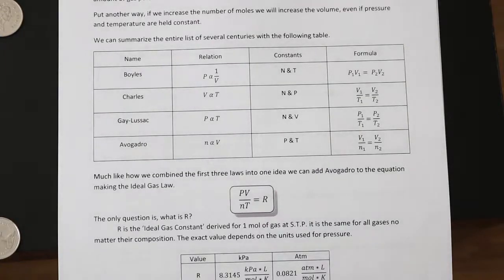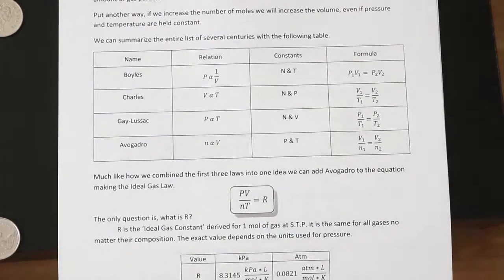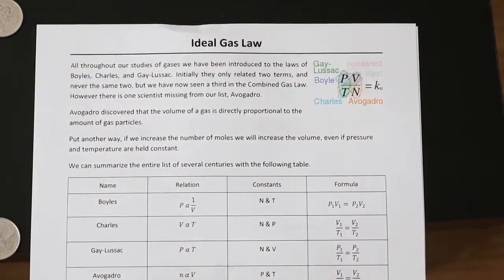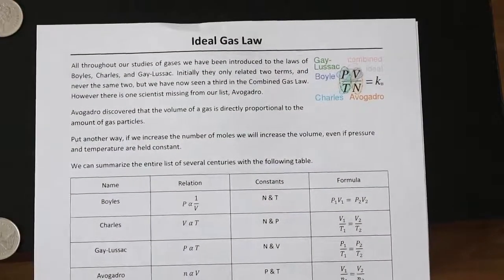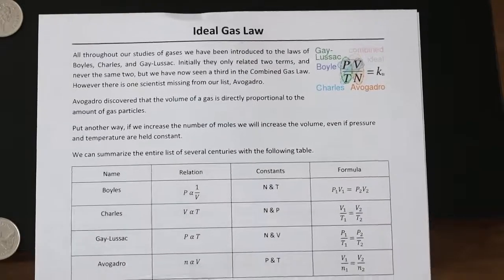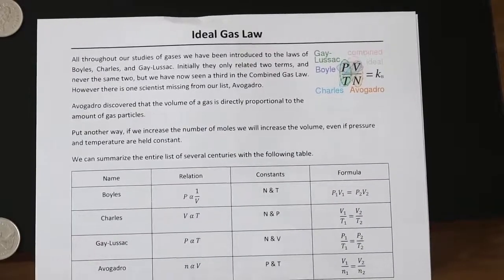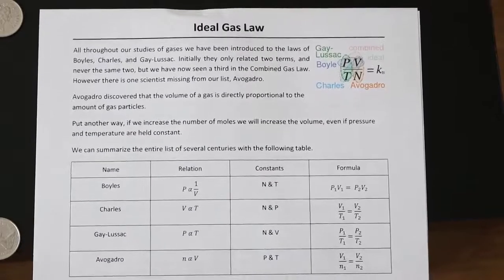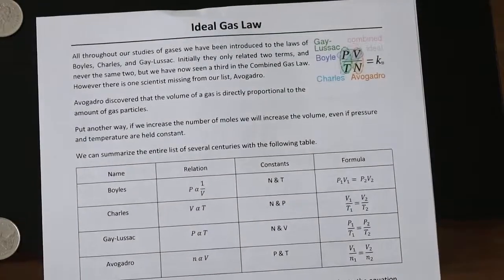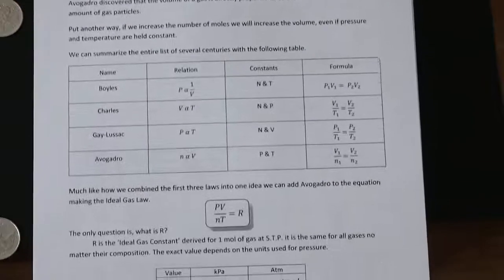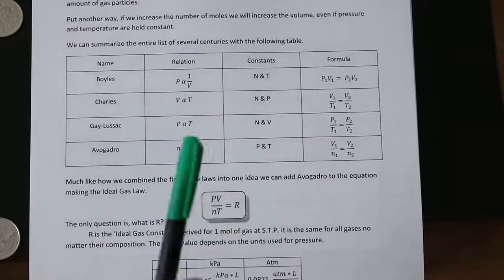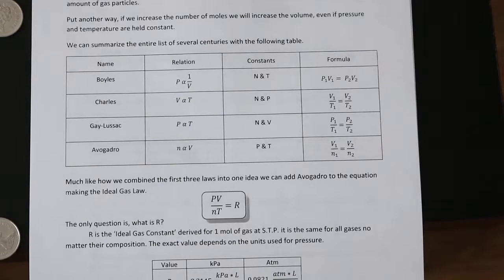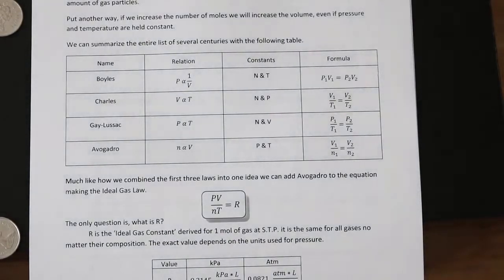The last sort of law we need to deal with is the ideal gas law. And the first thing you might be wondering is what an ideal gas is defined as. It turns out that an ideal gas is just a gas that obeys all of the gas laws and equations that we've been studying. Just to recap, these are all of the equations that we've looked at so far. So we looked at Boyle's law, Charles' law, and Gay-Lussac's law. The last thing we need to consider is Avogadro.